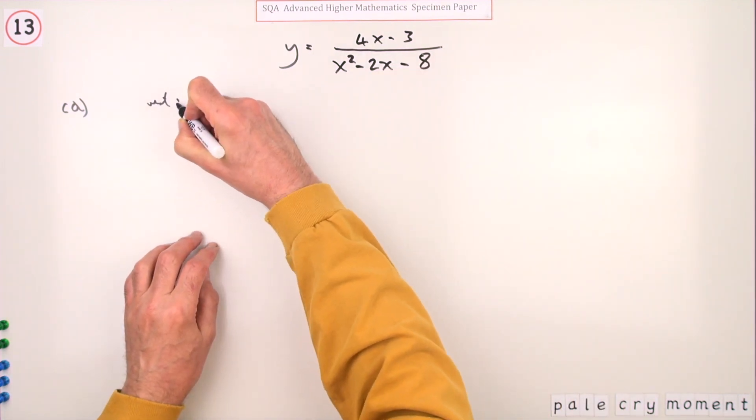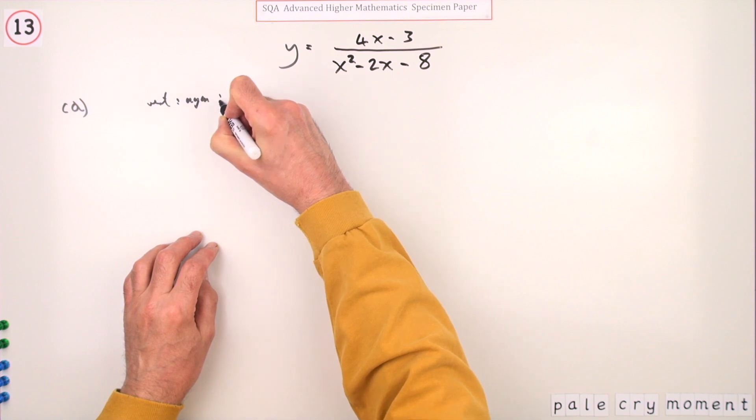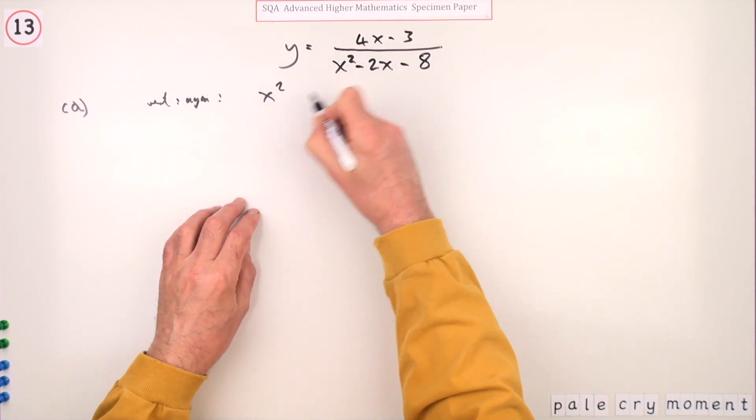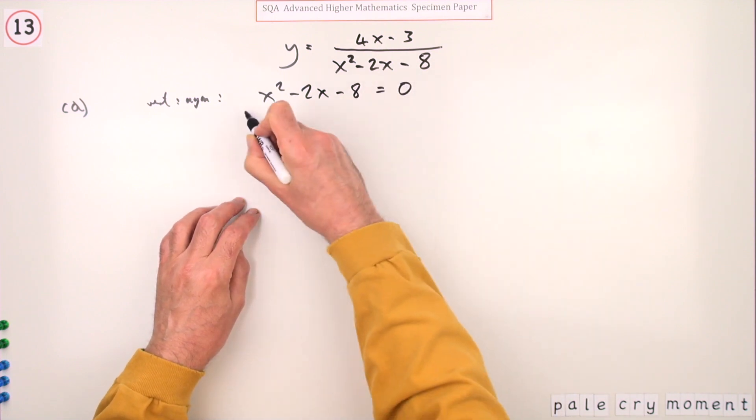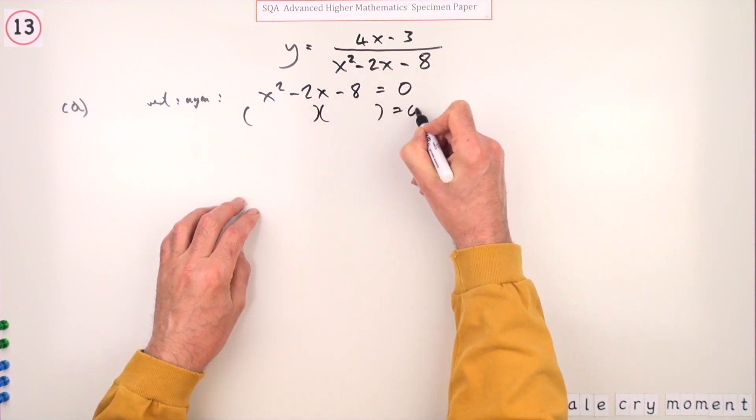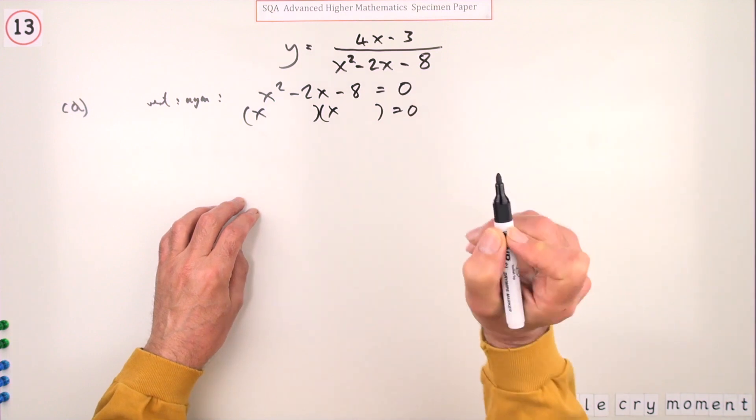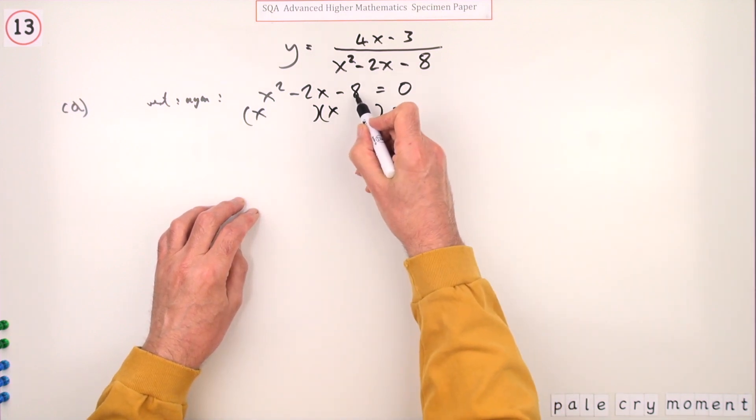So it's just a case of factorizing that. Then that must be x times x. Multiplied to give 8 with a difference of 2, that'll be 2 and 4. So it must be minus the 4 plus the 2.